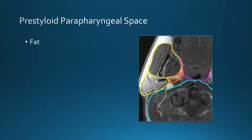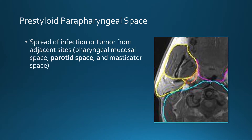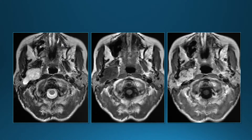Normally the only structures in the pre-styloid parapharyngeal space are fat and sometimes some minor salivary gland tissue. Since there's not much in there, most of the time when we see a lesion in the pre-styloid parapharyngeal space it's due to spread of infection or tumor from one of the adjacent spaces: the pharyngeal mucosal space, parotid space, or masticator space — most commonly spread from the parotid space. Going back to our lesion, it is in contact with the deep lobe of the parotid gland.